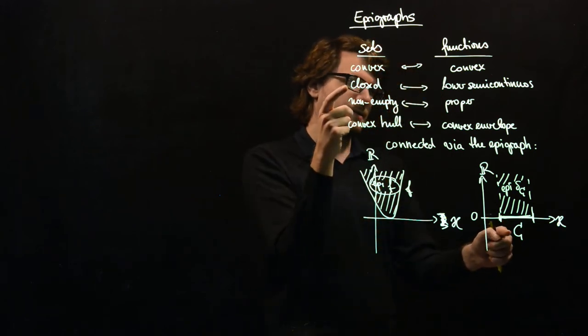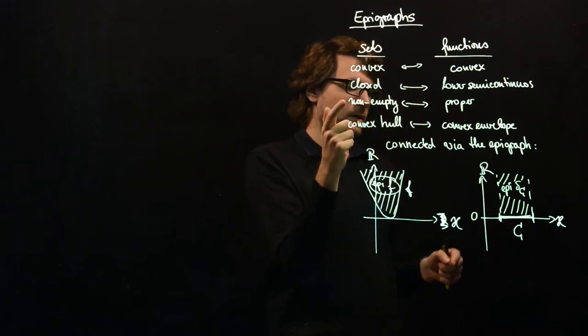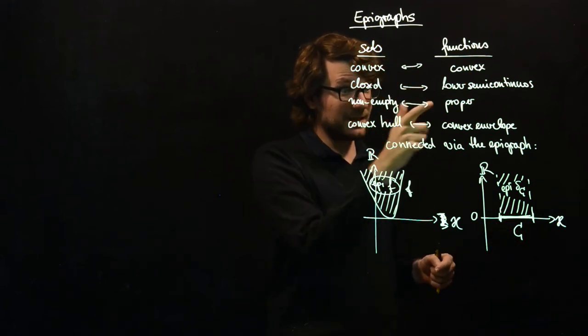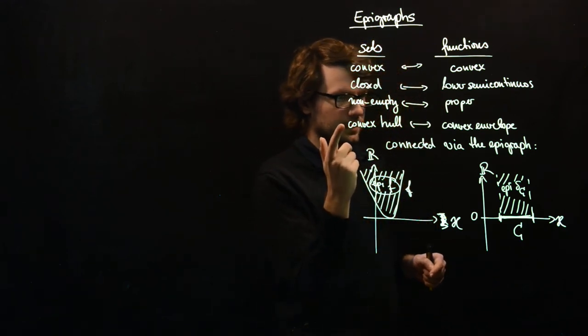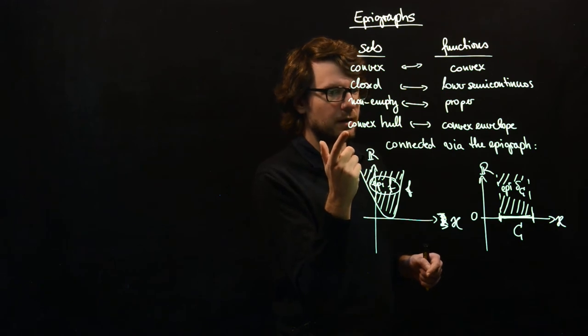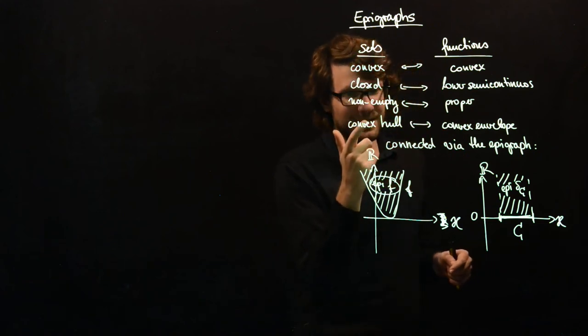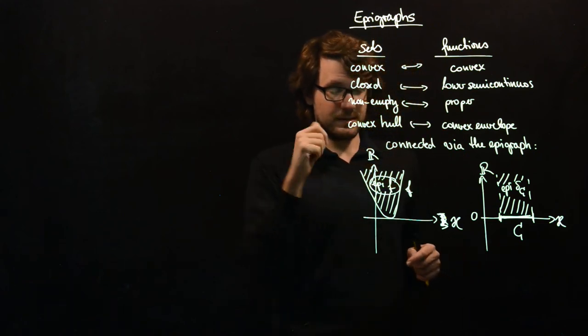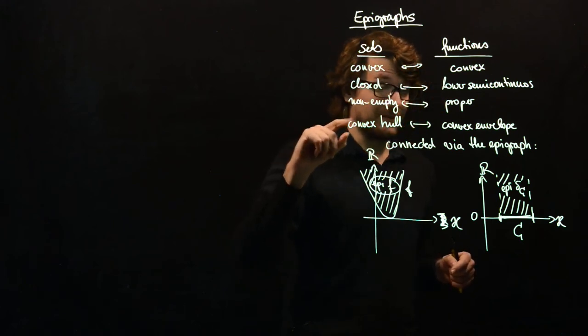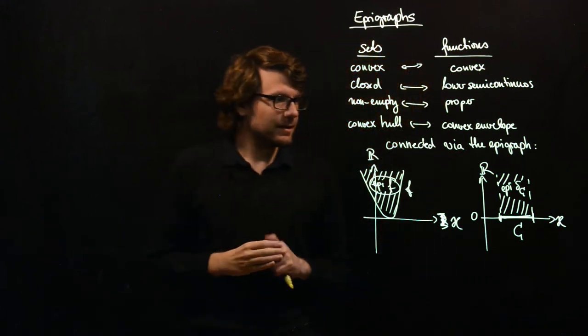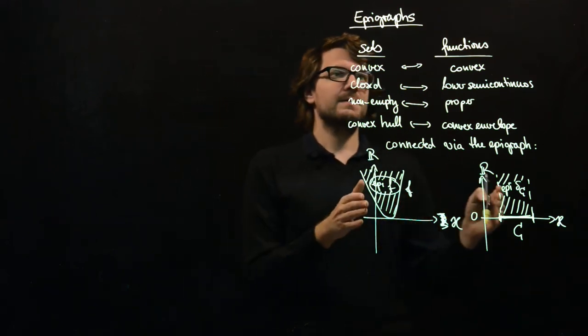Whenever this set C is closed, then the indicator function is lower semi-continuous. Whenever C is non-empty, then the indicator function is proper. And the convex hull, the convex envelope of the indicator function of a set is the indicator function of the convex hull. So these are the two ways these things are connected. We have defined indicator functions and now we will define epigraphs.